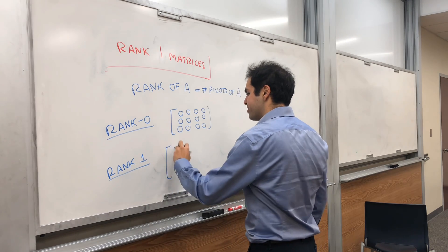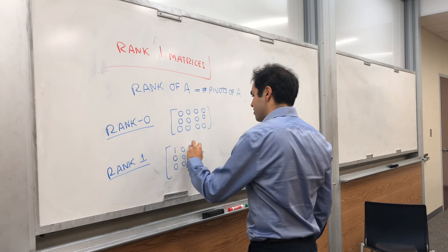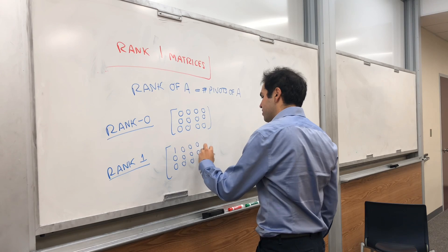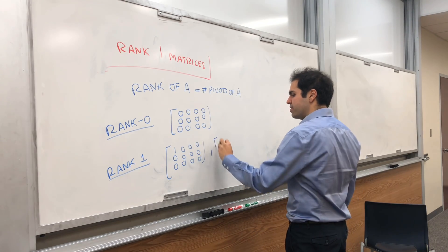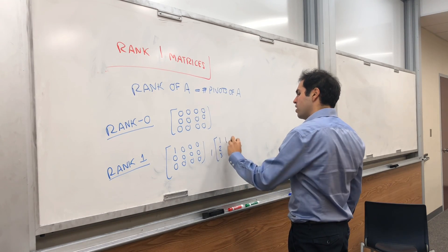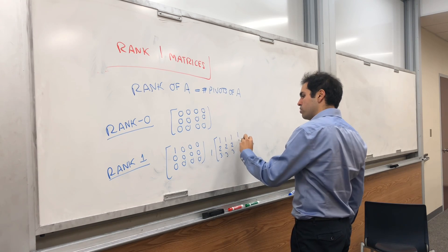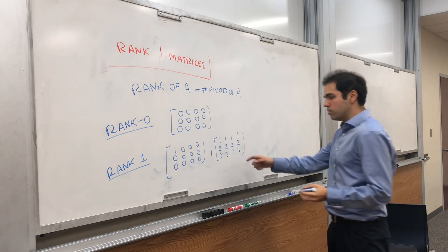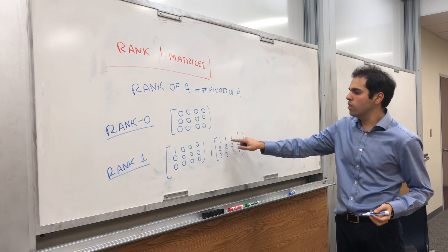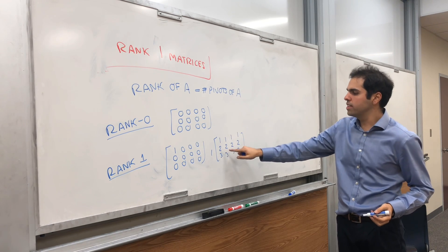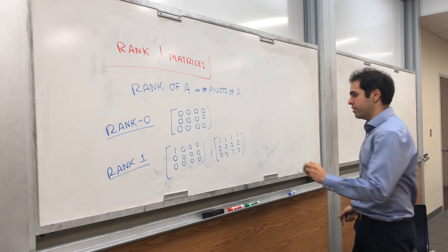So you could have a matrix like that: 1, 0, 0, 0 and zeros everywhere else. But also matrices like: 1, 2, 3 / 1, 2, 3 / 1, 2, 3 / 1, 2, 3. Because if you row reduce this, it turns out you just get 1, 1, 1, 0 and a bunch of zeros. So there would just be one pivot here.